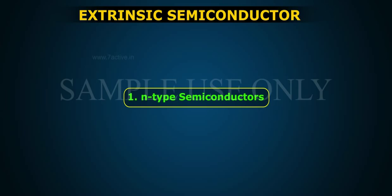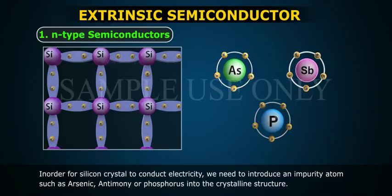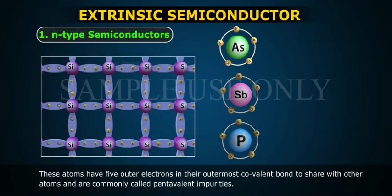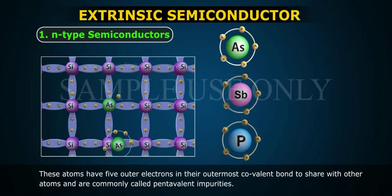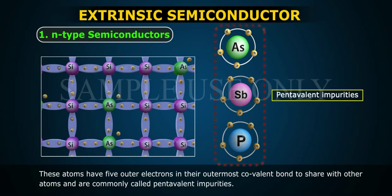N-type semiconductors. In order for silicon crystal to conduct electricity, we need to introduce an impurity atom, such as arsenic, antimony, or phosphorus, into the crystalline structure. These atoms have five outer electrons in the outermost covalent bond to share with other atoms, and are commonly called pentavalent impurities.